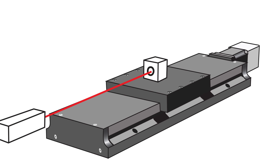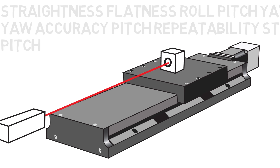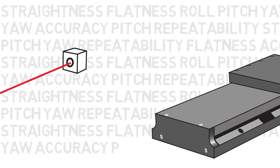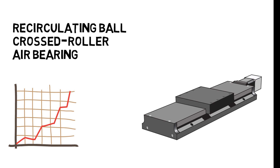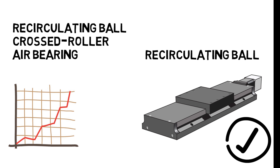Each of these geometric motions is measured using precision equipment on the moving tabletop. As the stage moves through its travel, the variation in each angular direction is measured one at a time. Different bearing technologies have different levels of performance in terms of these geometric characteristics, and your unique application requirements dictate which kind of stage and bearing combination is optimal for any given use.